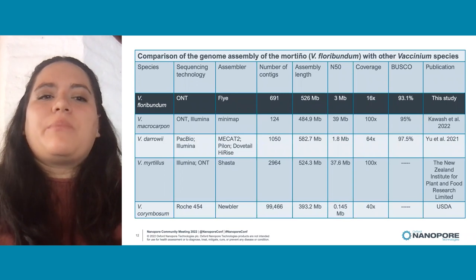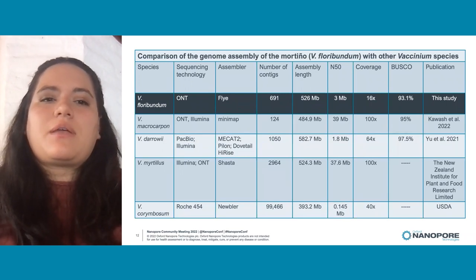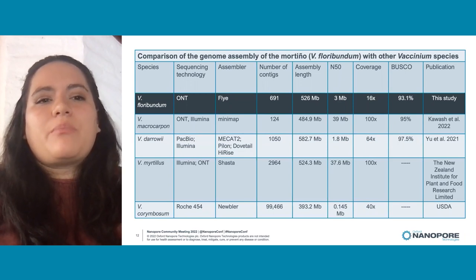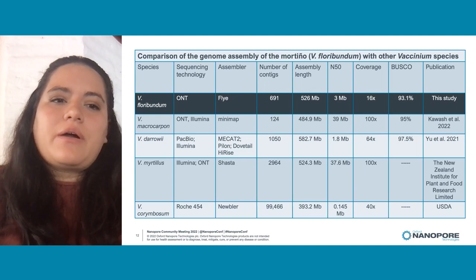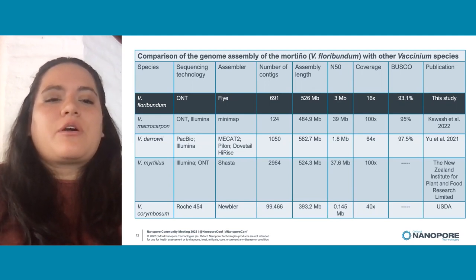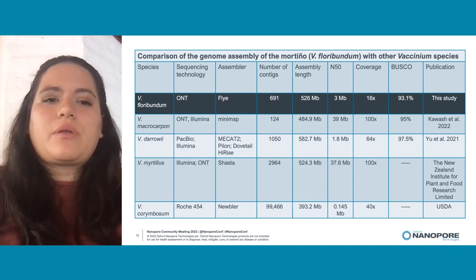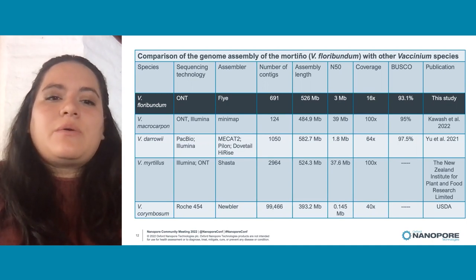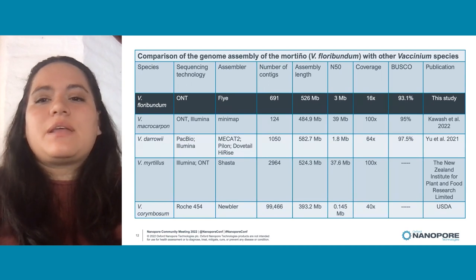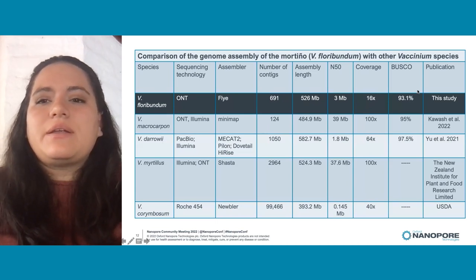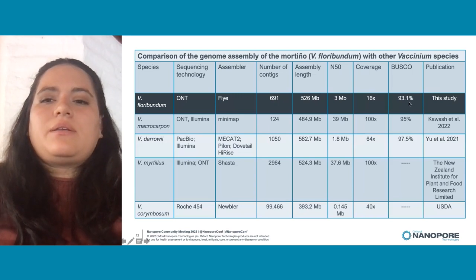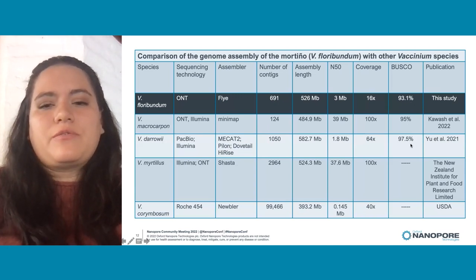With this assembly, we also constructed a table comparing the Flye assembly of Mortiño to assemblies from other Vaccinium species. It is important to note that we have used only ONT technology, whereas the other studies used a combination of different sequencing technologies such as Illumina, PacBio, or Roche. As we can see, we have comparable results with the other studies, even though our coverage is not as high. The BUSCO score is high and comparable with the results found in the other studies.